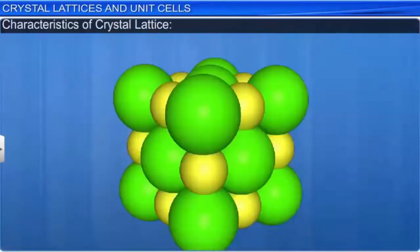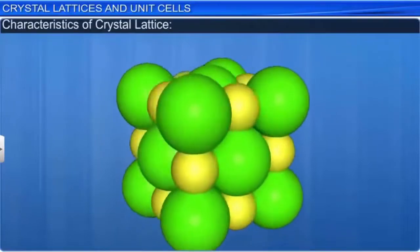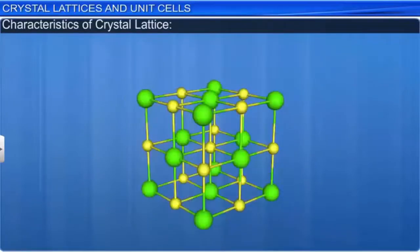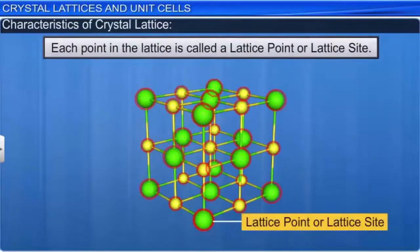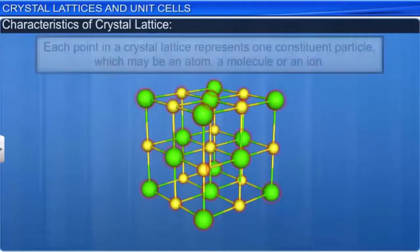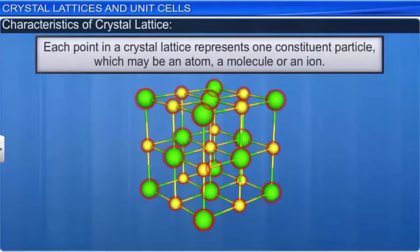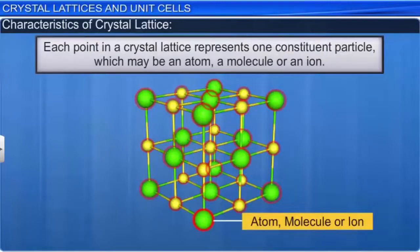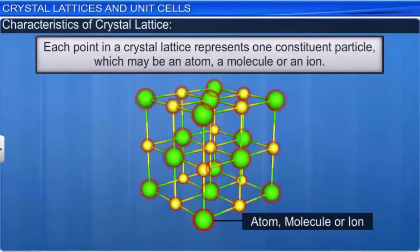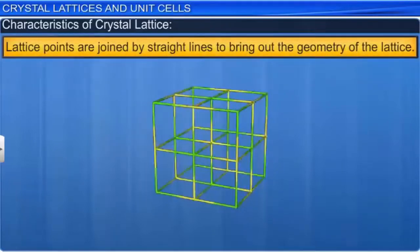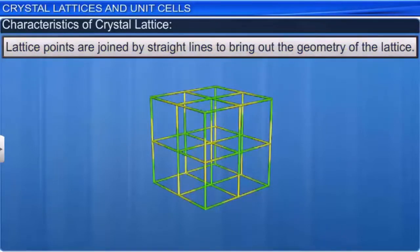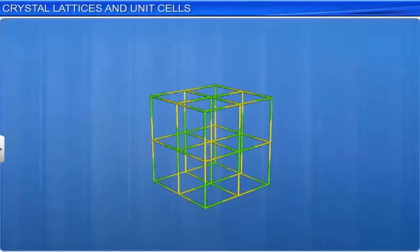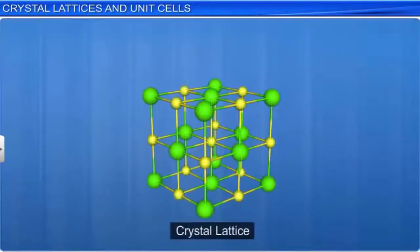There are only 14 possible three-dimensional lattices, called Bravais lattices, after Auguste Bravais, a French mathematician who first described them. Each point in a lattice is called a lattice point or lattice site. Each point in a crystal lattice represents one constituent particle, which may be an atom, a molecule, or an ion. Lattice points are joined by straight lines to bring out the geometry of the lattice.